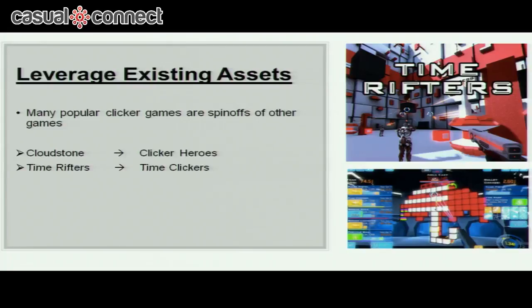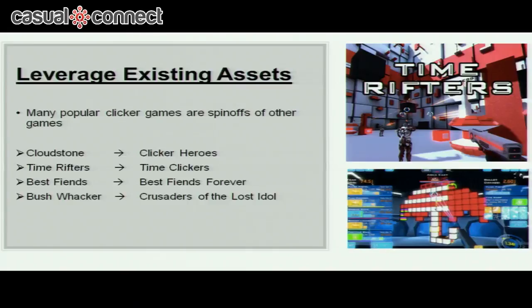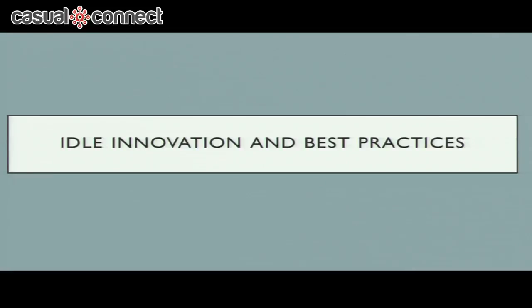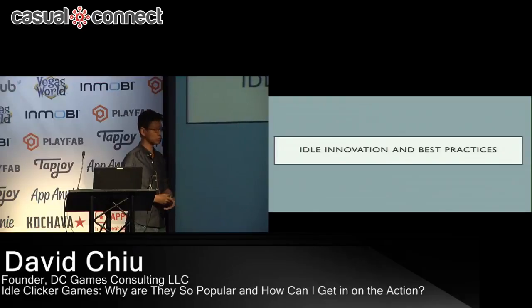A lot of popular clicker games are actually spin-offs of other games. Clicker Heroes came from Cloudstone. Time Clickers came from a first-person shooter called Time Rifters. Best Fiends Forever came from Best Fiends. Crusaders of the Lost Idols used a lot of art and characters from Bushwhacker and Bushwhacker 2. This can lower production costs and help you get to market even faster. The genre has been around for a few years and we've seen a lot of innovation and evolution, which we'll dive into now along with some best practices.